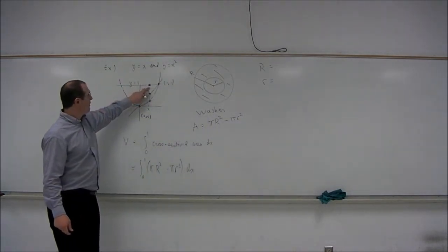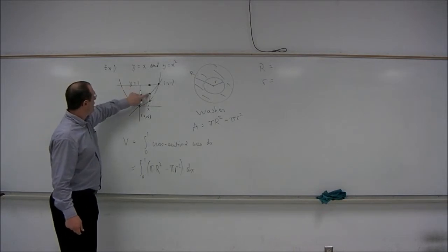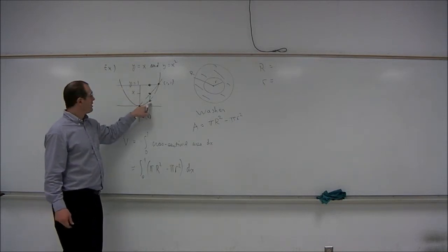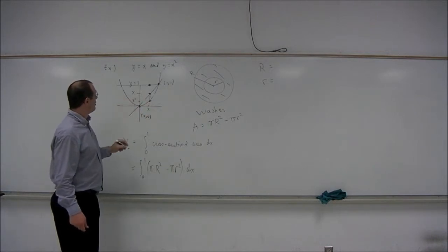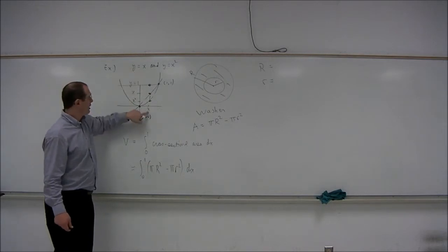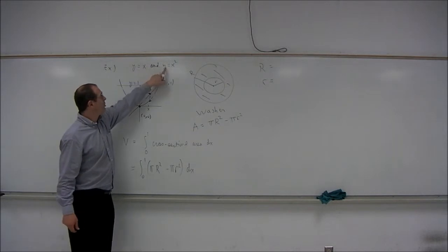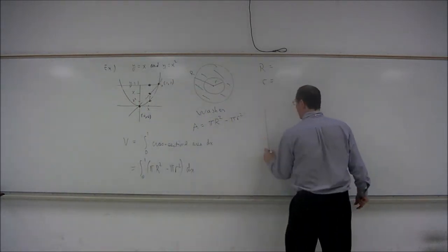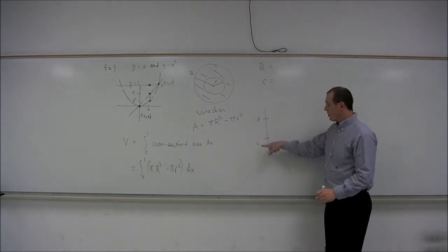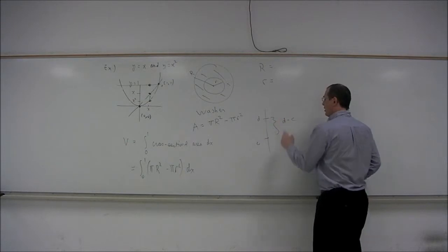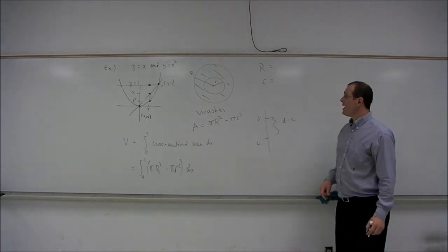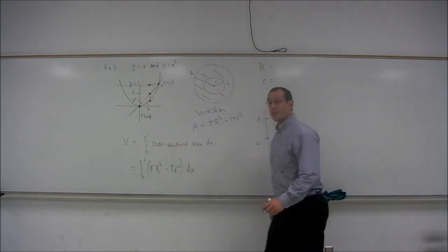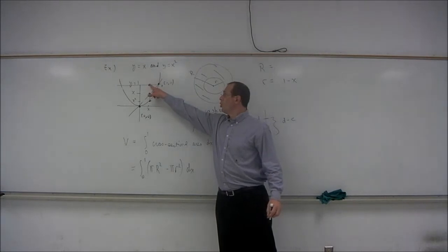The y coordinate of the top point is 1. The y coordinate of the point on the line is x, and the y coordinate of the point on the parabola is x squared, coming from y equals x and y equals x squared respectively. To find the radii: if you have two points on the y-axis, c and d, the distance between them is d minus c. So little r equals 1 minus x, and capital R equals 1 minus x squared.